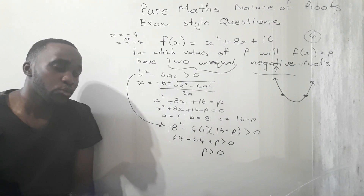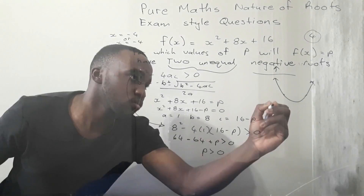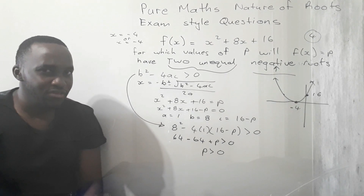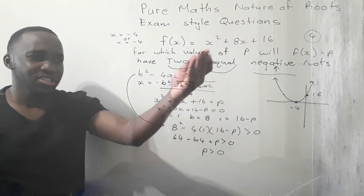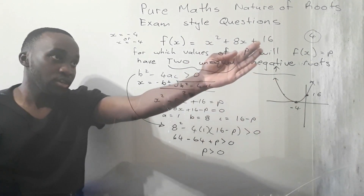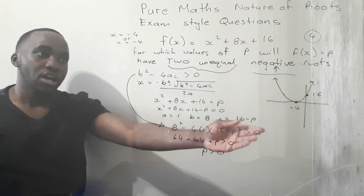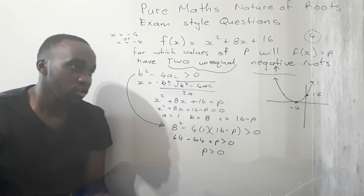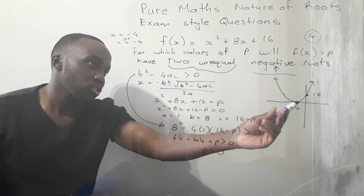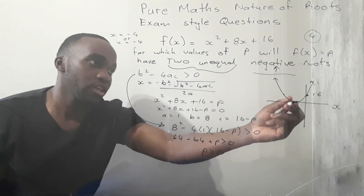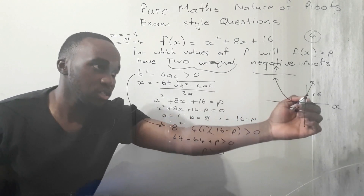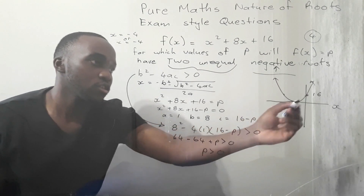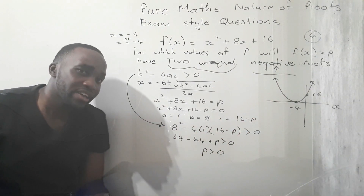In terms of our sketch, we need to visualize this: it's a smiling parabola, the x-intercept is at x = −4 (a repeated root), and the y-intercept is 16. So it's a smiling parabola touching the x-axis at −4 and crossing the y-axis at 16.